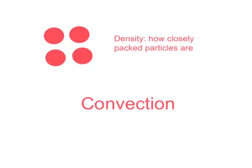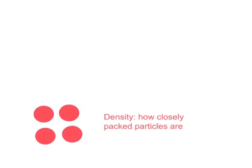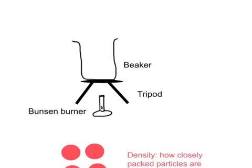So we did an experiment to find out how convection happens in terms of density. And in this experiment what we did was we took a beaker which we put onto a tripod and we set up a Bunsen burner. So we then filled the beaker with some cold water halfway up, and we dropped in a purple potassium permanganate crystal. So what happened was this crystal started to dissolve, and at this point we put the Bunsen burner on, on a blue flame.